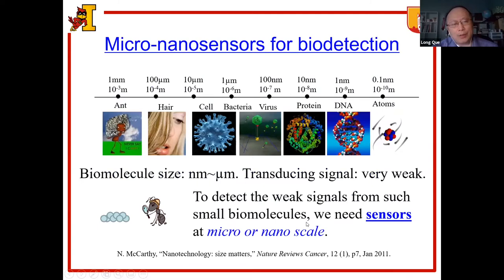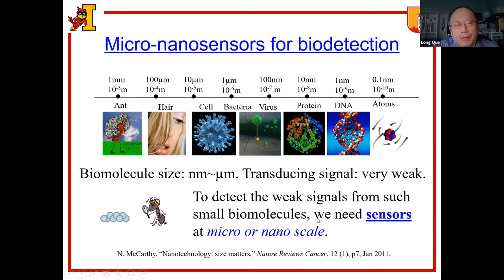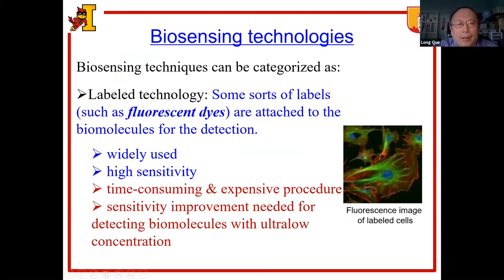As we know, the typical biomolecule size is in the range of nanometers to micrometers. Given their tiny size, the transducing signal is very weak for biodetection. In order to detect those weak signals from such small biomolecules, we need sensors at micro or nano scale. In terms of biosensing technologies, we can roughly divide them into two categories.